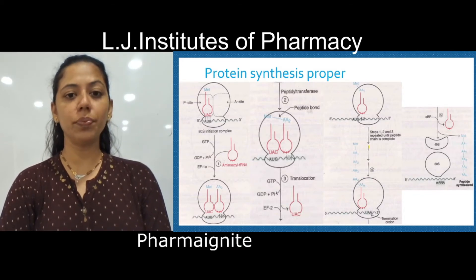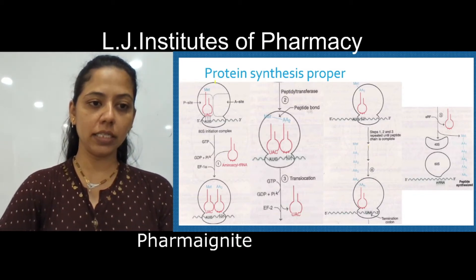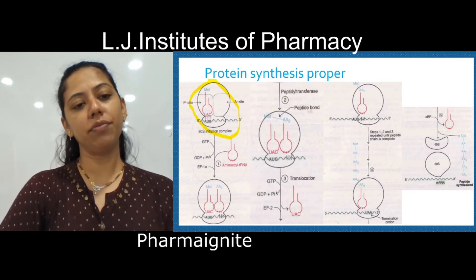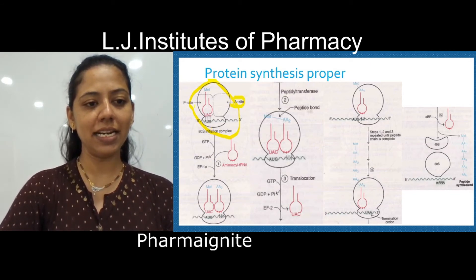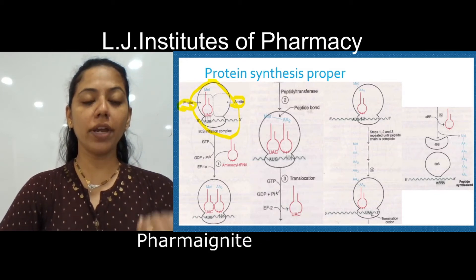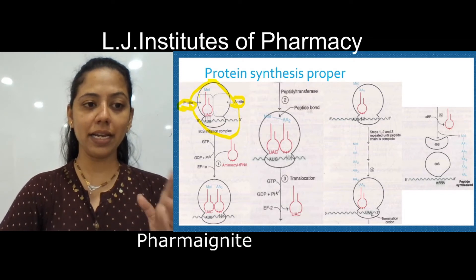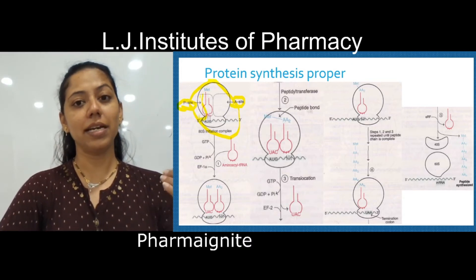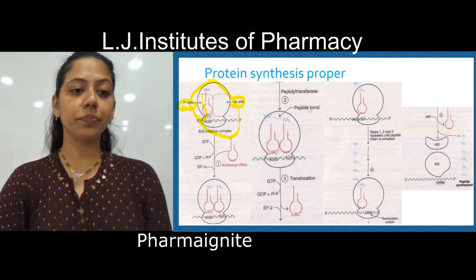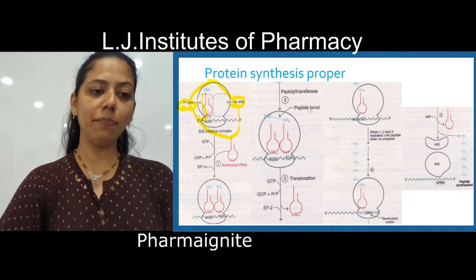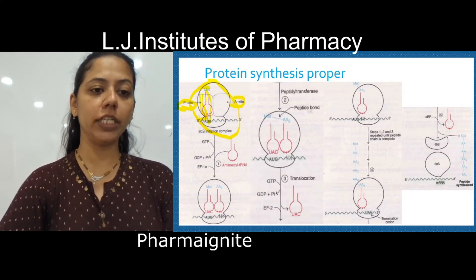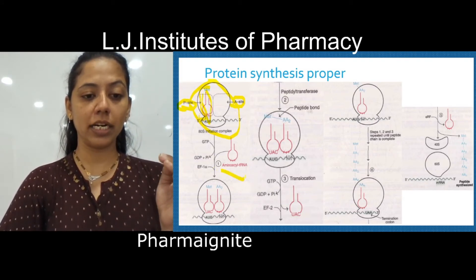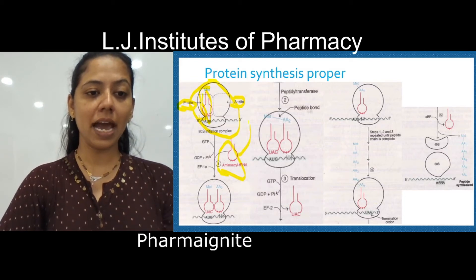Our third step is the actual protein synthesis. Here you can see the ribosome molecule — one bigger part and one smaller part, the two subunits of the ribosome. You can easily find the A site and P site. This is the prokaryotic translation process; in the case of eukaryotes, there is also an E site — the exit site. To the P site, the initiation methionine is going to attach.